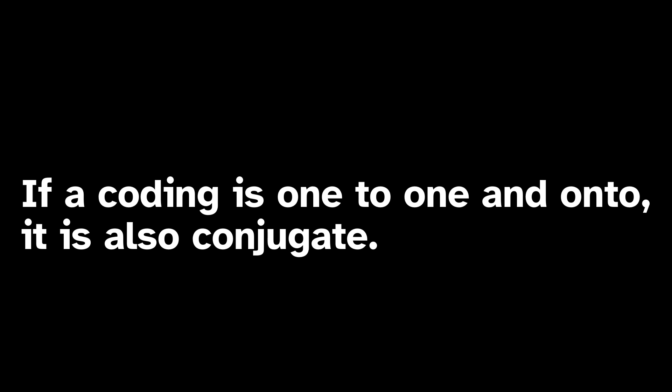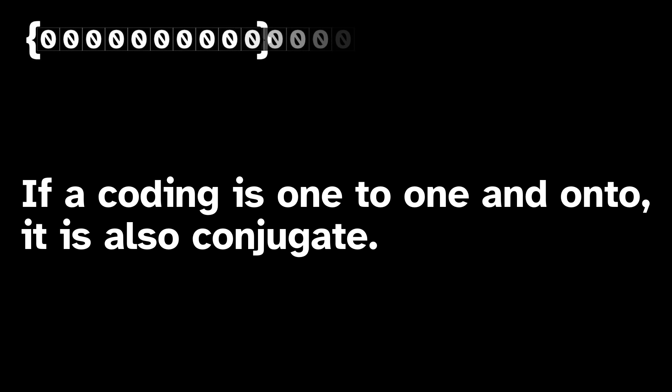The conjugacy problem is the problem of determining whether two given dynamical systems are conjugate or not, that is, if there exists a conjugacy map between them. This is a major foundational problem in both general dynamics and symbolic dynamics specifically, and it isn't fully understood even today.